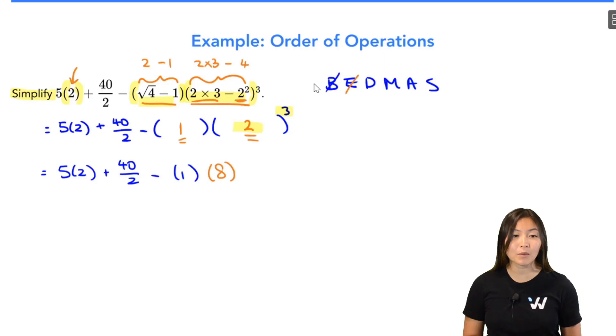Now division and multiplication. We're going to go left to right. Well I see a multiplication here. That's 5 times 2, which is 10. Oh, I see a fraction. But remember what I said. Fractions are the same as division. So, instead of plus 40 over 2, that's plus 40 divided by 2. 40 divided by 2, that's going to be 20.